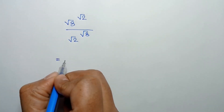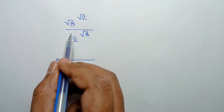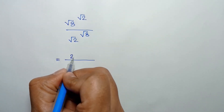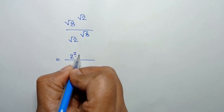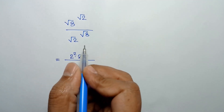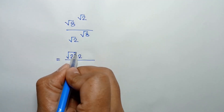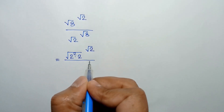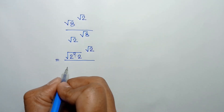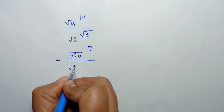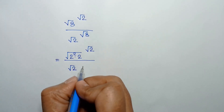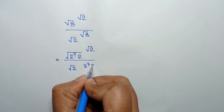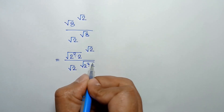The numerator, square root of 8, can be written as square root of 2 squared times 2, to the power square root of 2. Similarly, 8 in the denominator is also 2 squared times 2, under a square root.